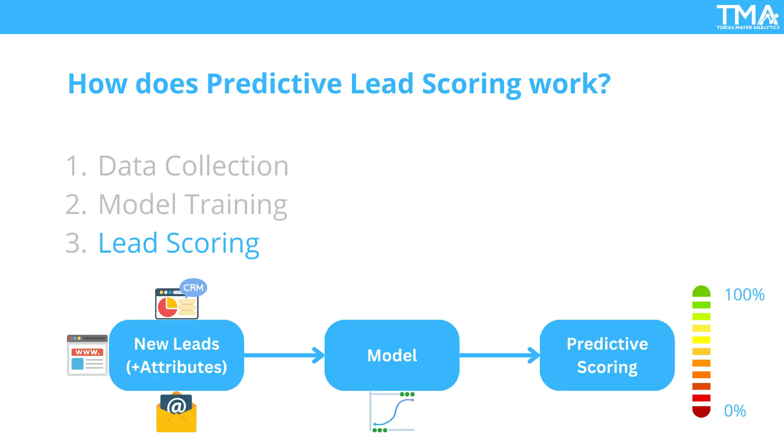With this insight, your sales team focuses their efforts on these top leads, offering them personalized demos and outreach. Because these leads were already showing signs of high intent, your conversion rates soar. Not only do you close more deals, but you also save time by avoiding low potential leads. The result? Increased efficiency, a higher win rate, and a more effective sales process.